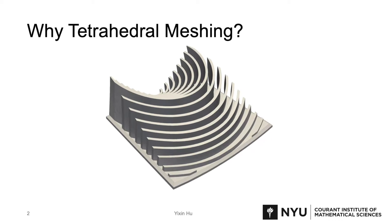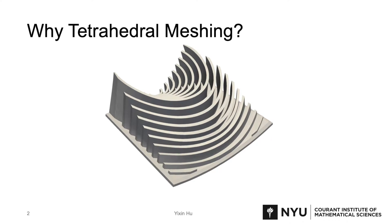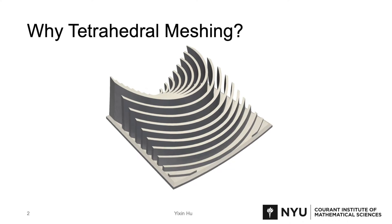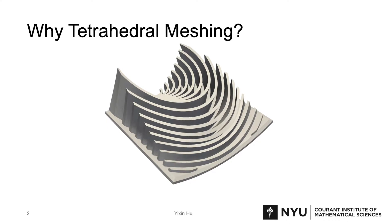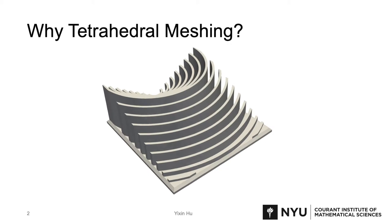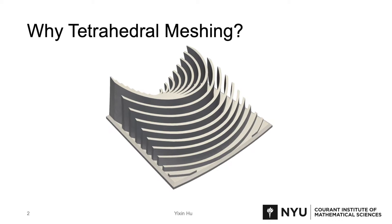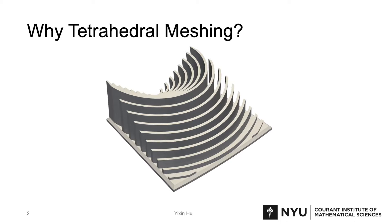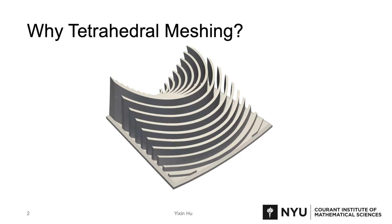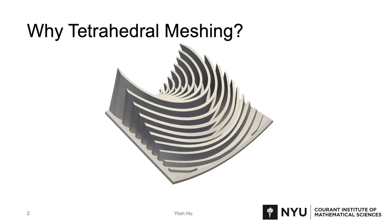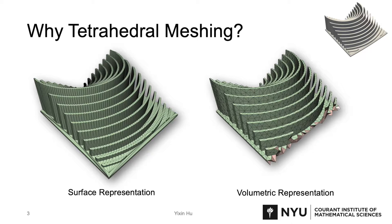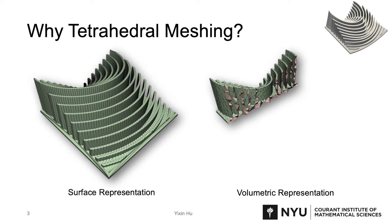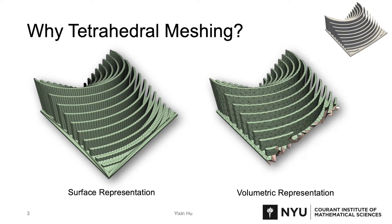In many cases, we need a nice volumetric representation for an object. For example, we may want to simulate a physical object for collision tests in manufacturing, where we need its volumetric representation. Tetrahedral mesh is the most common way to represent the volume of a 3D object. Tetrahedral meshing is a practice to generate tetrahedral meshes, or TET meshes in short.